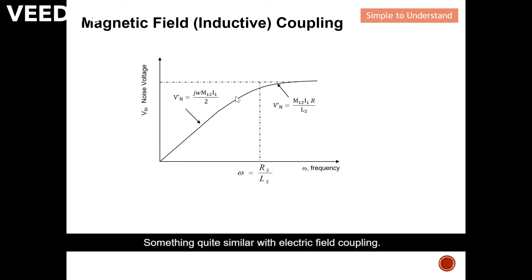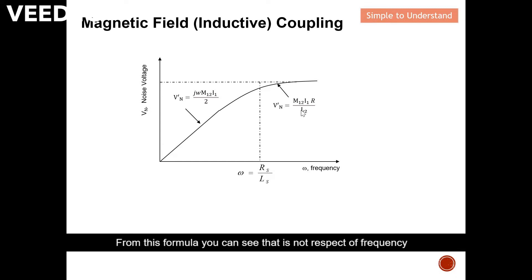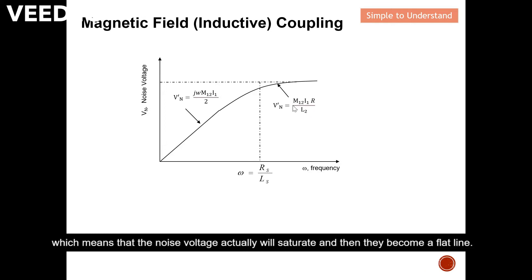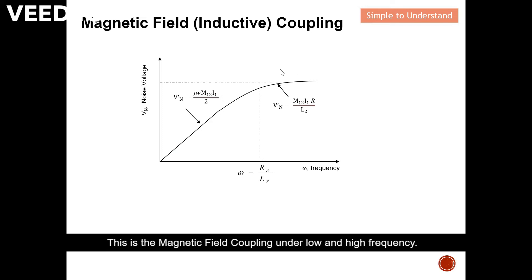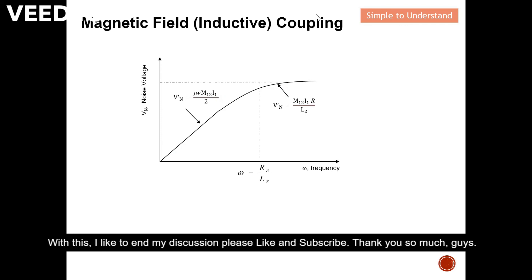We can plot a graph of frequency versus noise. From the low-frequency equation, the noise coupled is a function of frequency, so as frequency increases, the noise also increases — quite similar to electric field coupling. At high frequency, another formula comes into the picture. This formula is not a function of frequency, so it behaves almost like a DC source — the noise voltage saturates and becomes a flat line. This is the magnetic field coupling behavior under low and high frequency. Please like and subscribe — thank you so much!